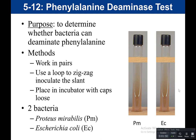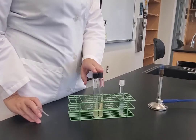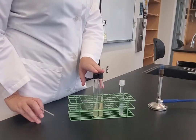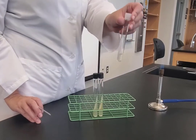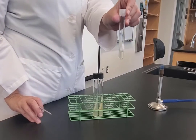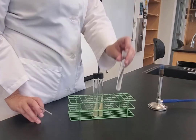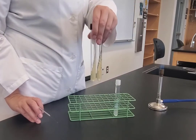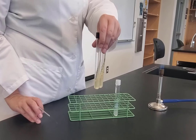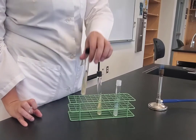Here's a video showing how to do this. In this experiment, this is going to be a phenylalanine deaminase test. What I have is a phenylalanine slant, which contains the amino acid phenylalanine. There are two bacteria that are going to be used: E. coli and Proteus mirabilis.